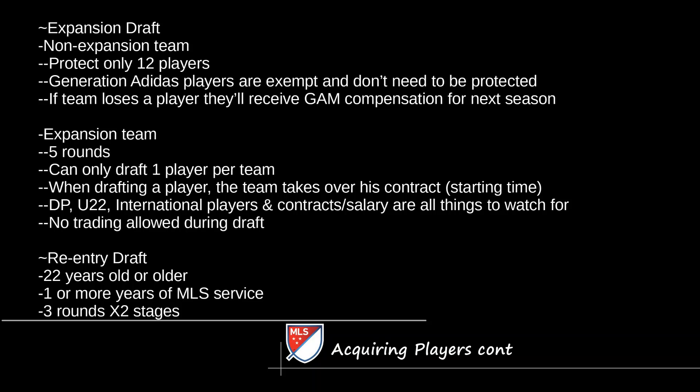The expansion draft only happens when there's an expansion team. Every non-expansion team gets to protect only 12 players, but Generation Adidas players are exempt — so if you have two Generation Adidas players, you can effectively protect 14. If a team loses a player, they receive GAM compensation for next season. If you're the expansion team, there are five rounds, you can only draft one player per team, and you take over that player's contract — including designated player or international slot status. Unlike every other draft, there is no trading allowed during the expansion draft; you can trade before or after, but not during.